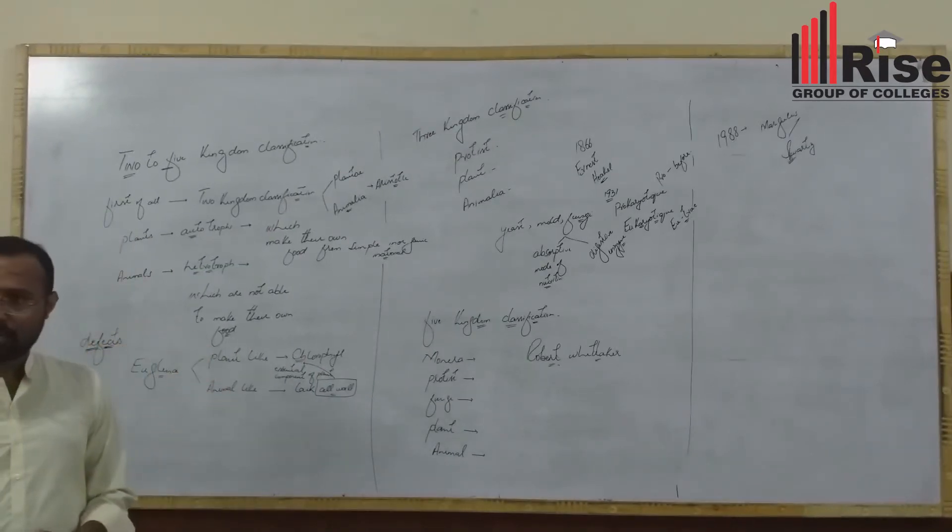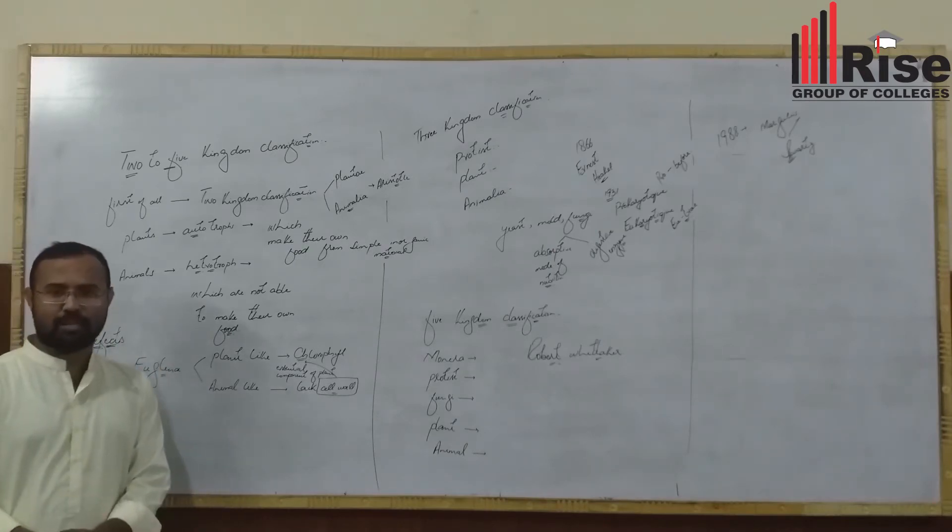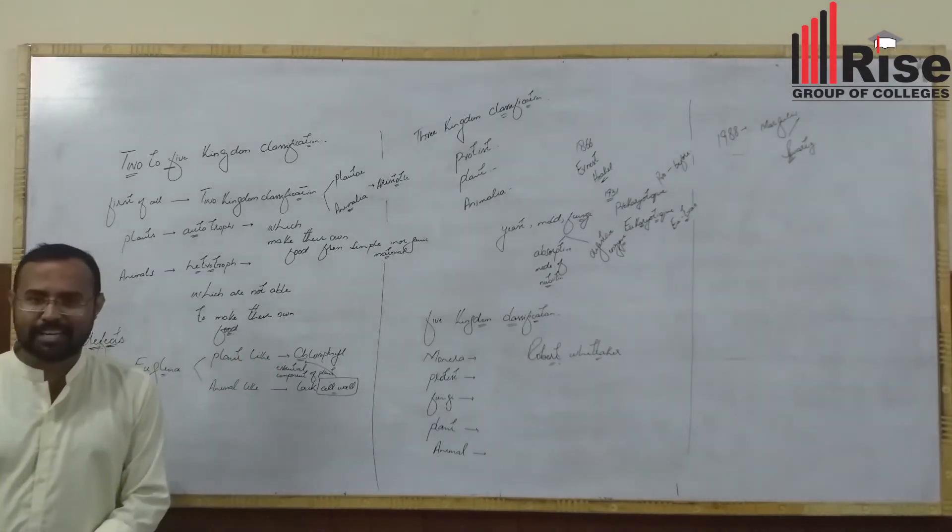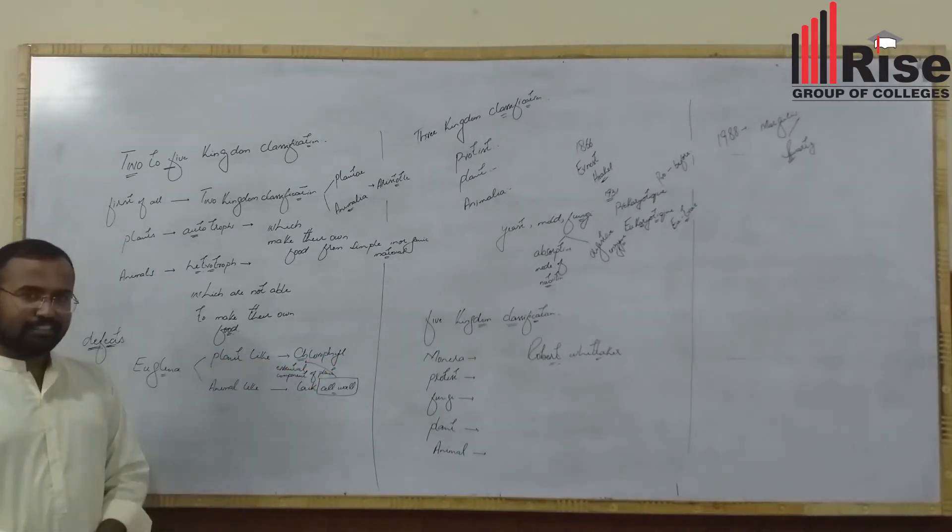Now this two kingdom classification still has difficulties. What we see at this point is organisms that have characteristics of both plants and animals.